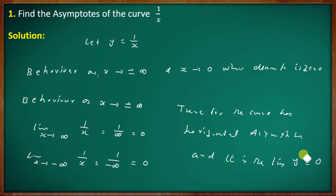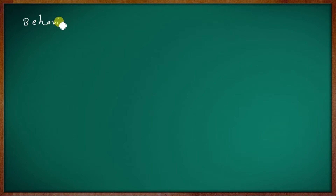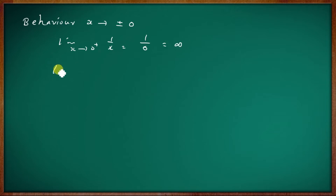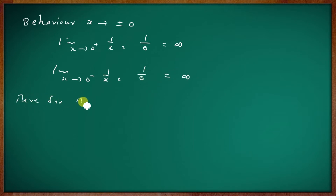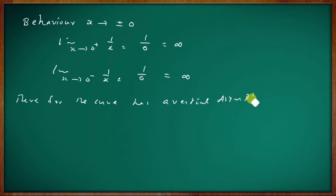Now for the vertical asymptote: as x tends to 0 plus, the limit of 1 by x equals 1 by 0, which is infinity. Similarly, the limit as x tends to 0 minus of 1 by x equals 1 by 0, which is infinity. Therefore, the curve has a vertical asymptote and it is the line x equal to 0.